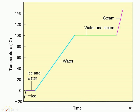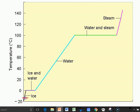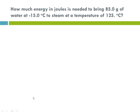Looking at the heating curve, we are starting at negative 15 and going all the way up to steam at 125. The first leg is ice from negative 15 to zero. Then we melt it. Then we take water at zero all the way up to 100. Then we vaporize it from water to steam. Then we take steam from 100 to its final temperature of 125. Reminding ourselves that we're calculating how much energy in joules to bring 85 grams from minus 15 to steam at 125.